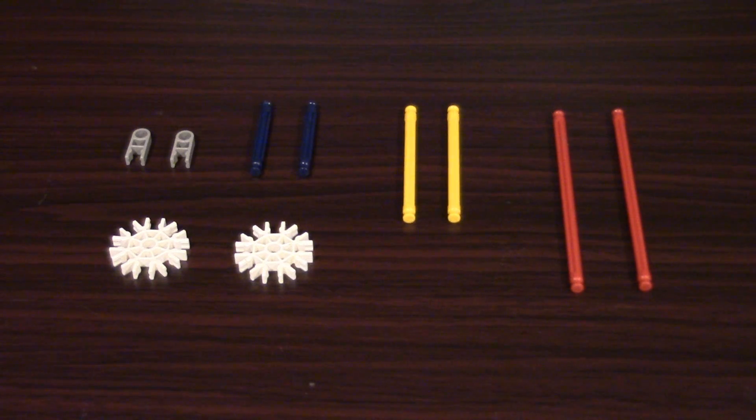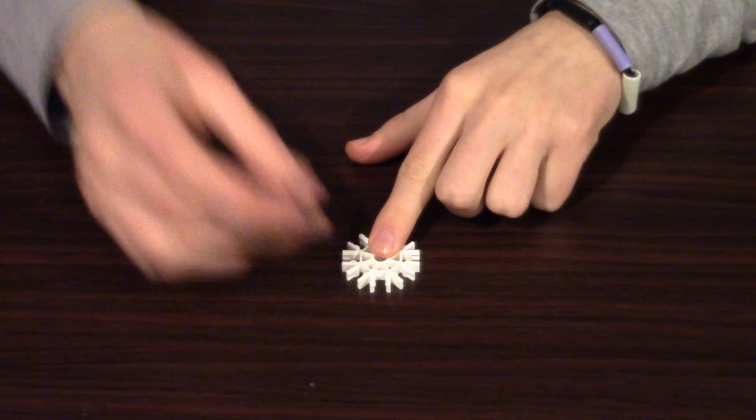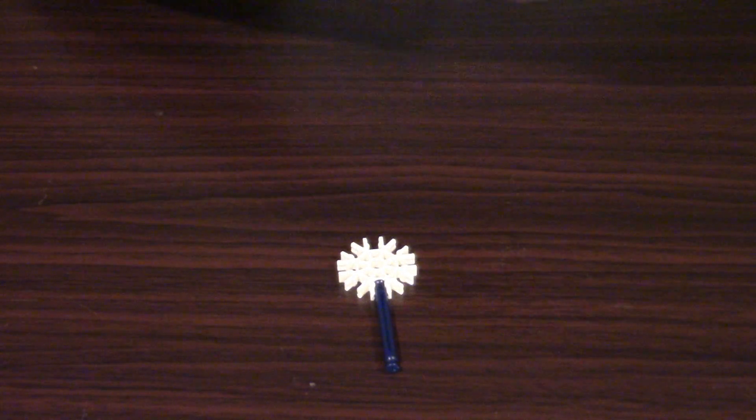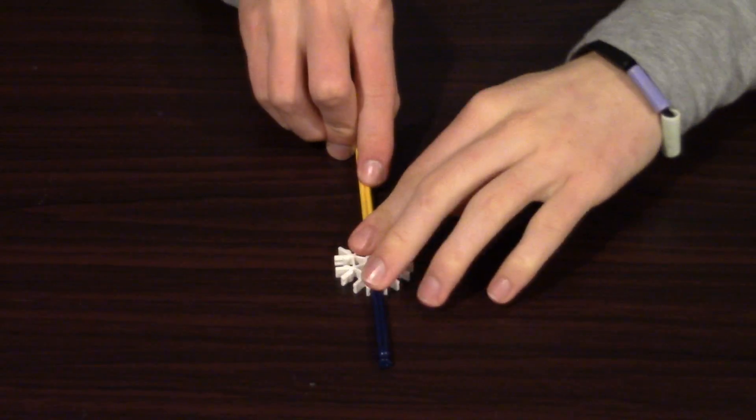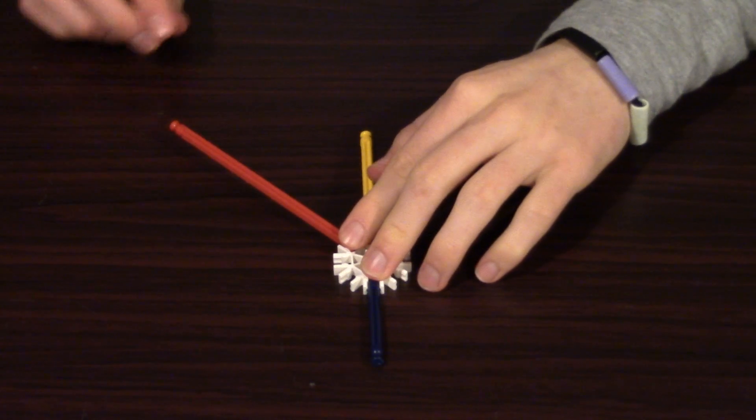Again, here are the pieces you'll need for the next module if you want to collect them ahead of time. This one is basically two of the same thing, so we'll do one, and then you can just do another one the same way. So we're going to take a white full circle connector, place one blue rod at the top, one yellow connector opposite from it, and then one red connector one spot away from the yellow one.